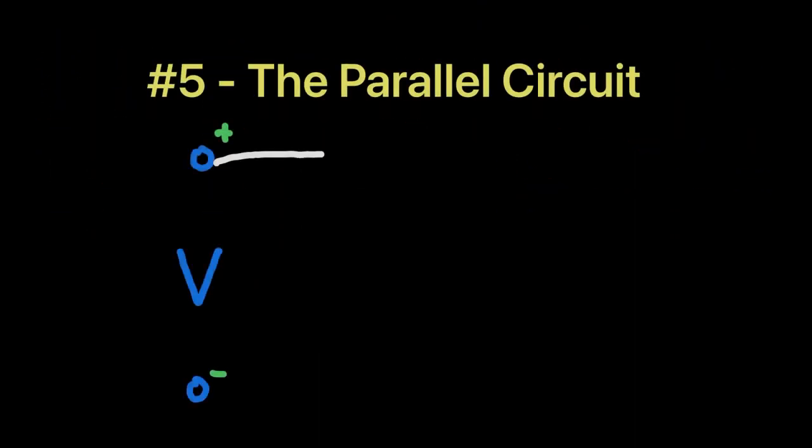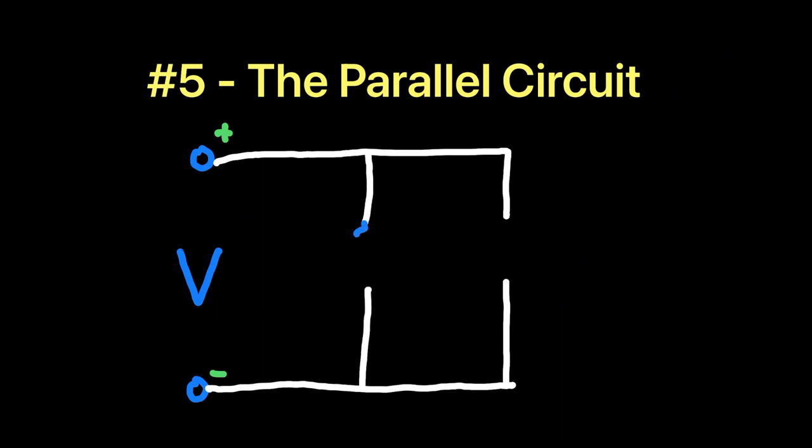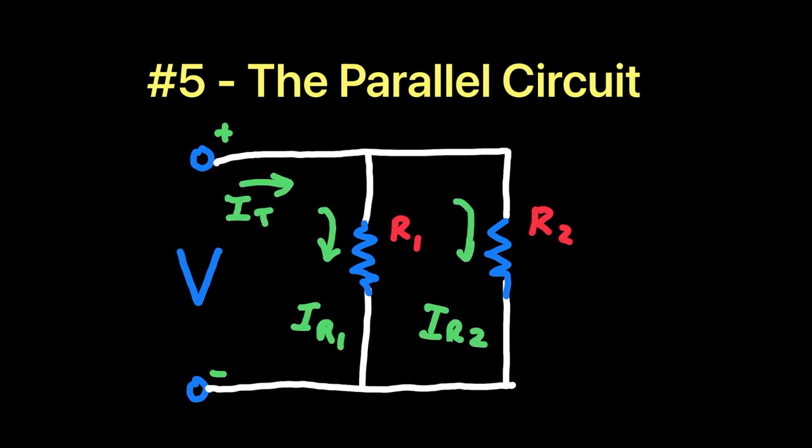The parallel circuit works quite differently than a series circuit. It consists of two or more loads in parallel that are essentially circuit branches. The voltage across each load is equal to the voltage source.